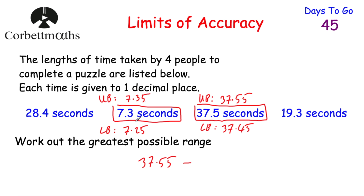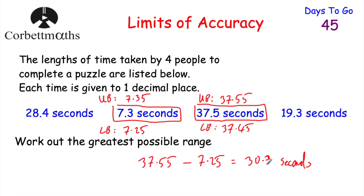And if we want the greatest possible range, we take away the lower bound for the shortest time. So we take away 7.25, because that gives us the biggest possible answer. Upper bound take away lower bound gives us the biggest possible range. If we wanted the smallest possible range, we would do the lower bound take away the upper bound. But in this case we want the greatest possible range, so we do 37.55 take away 7.25, which equals 30.3 seconds. So the answer is 30.3 seconds — well done if you got that.